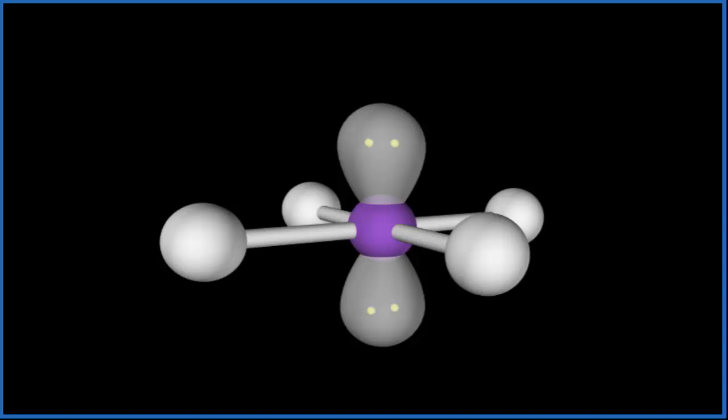If we looked at the electron geometry, or we looked at all of the atoms, the electrons and everything, this would be an octahedral electron geometry.